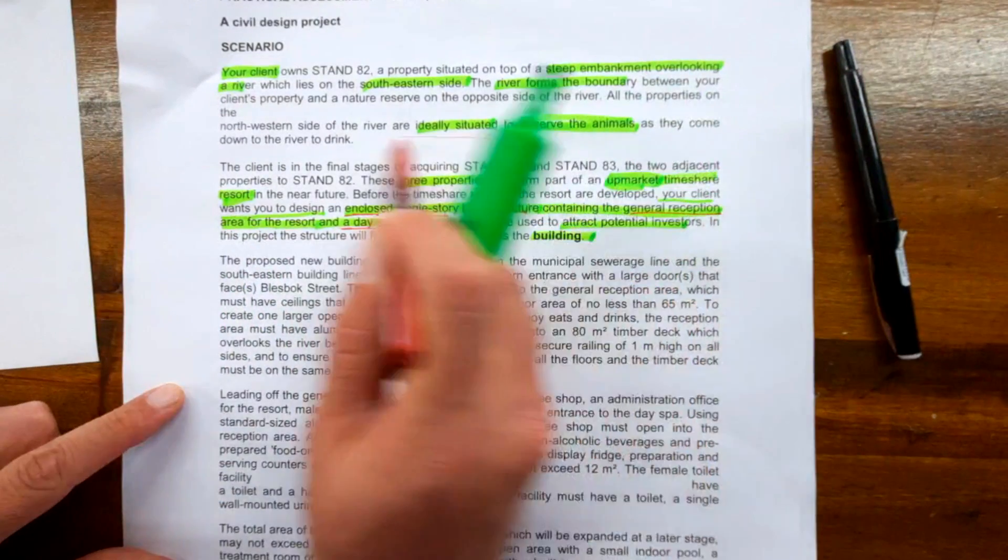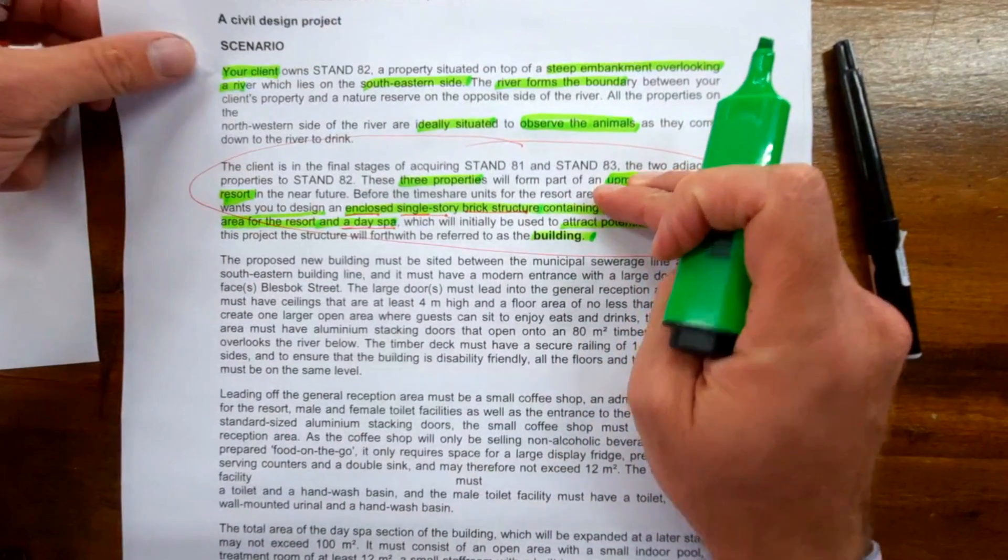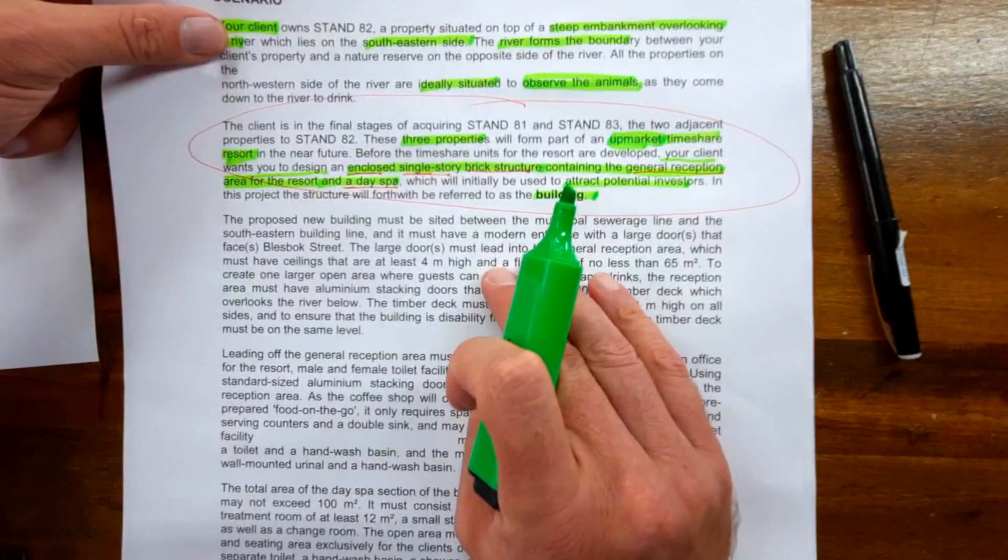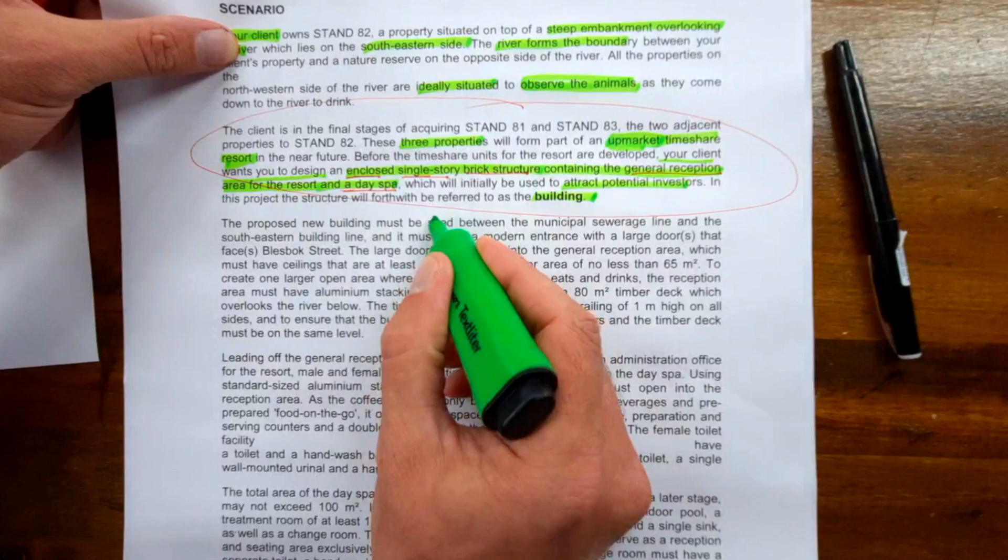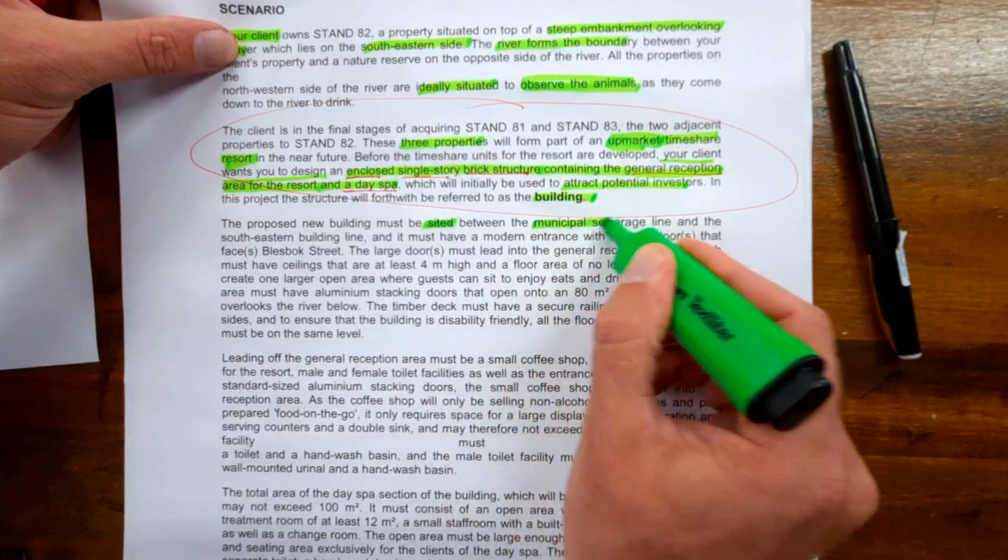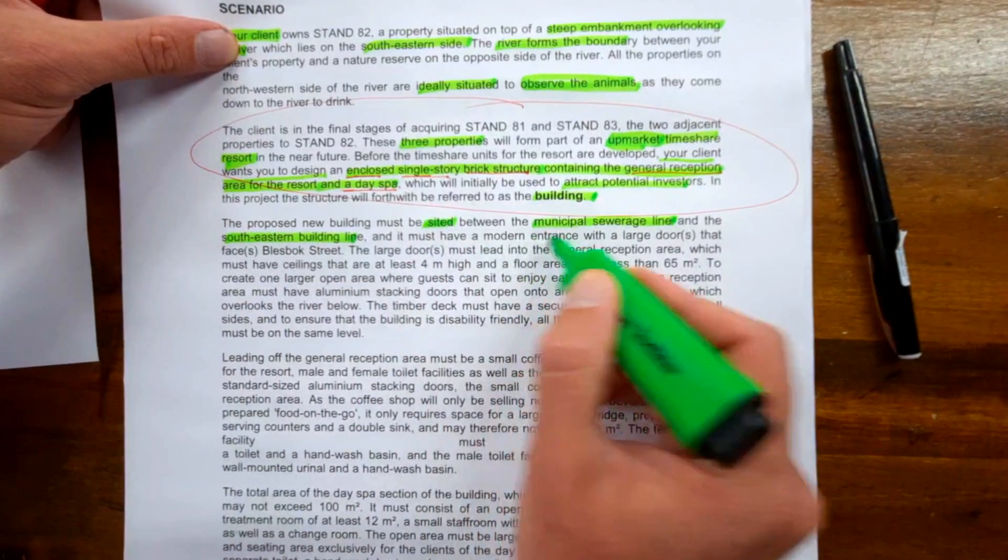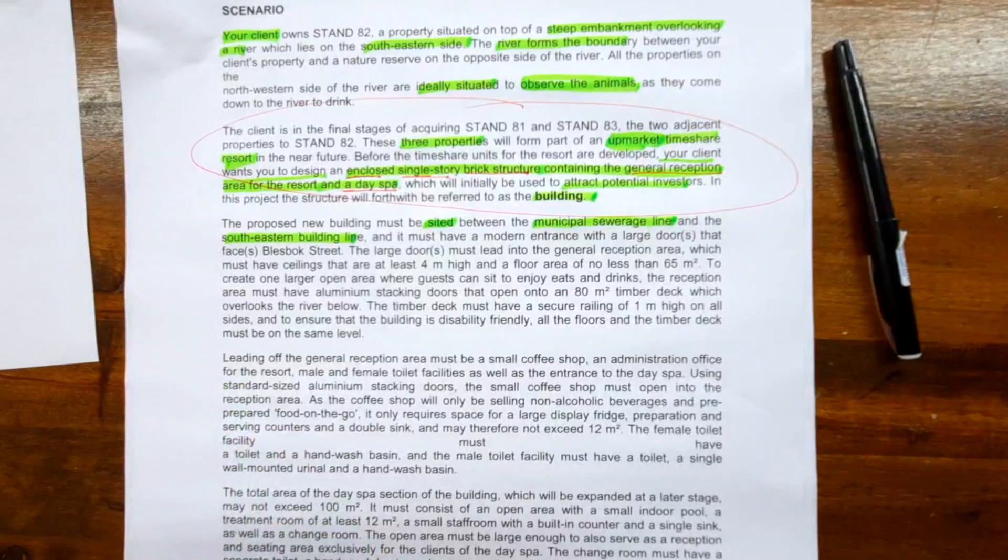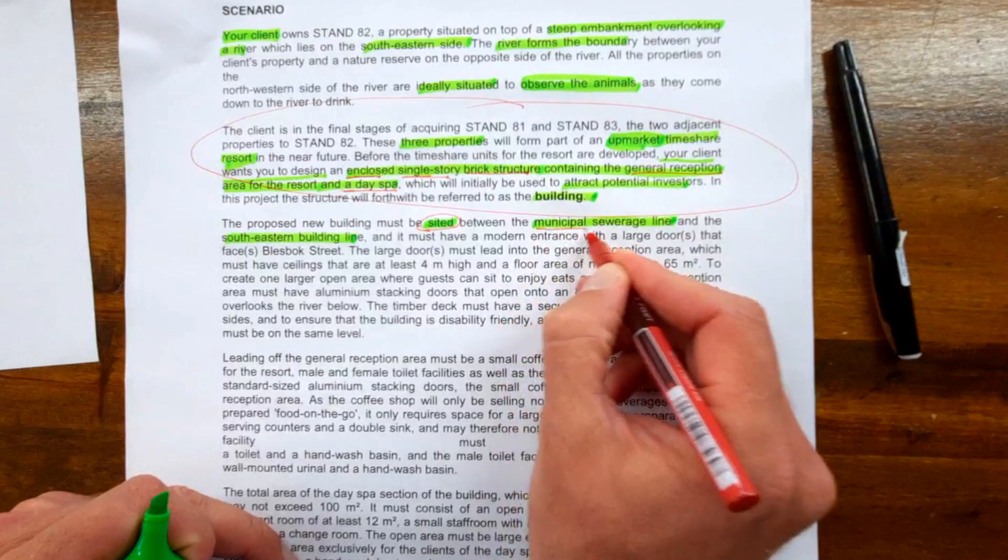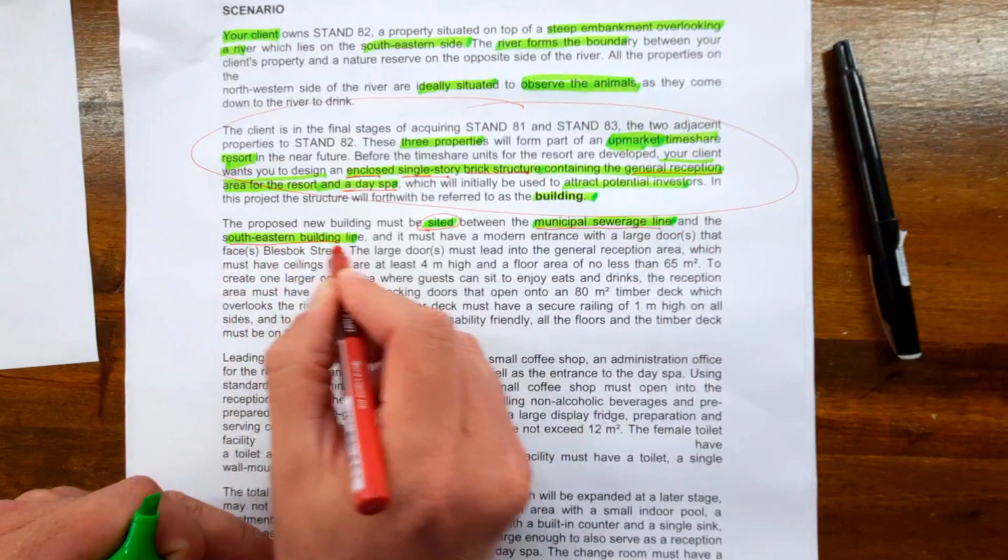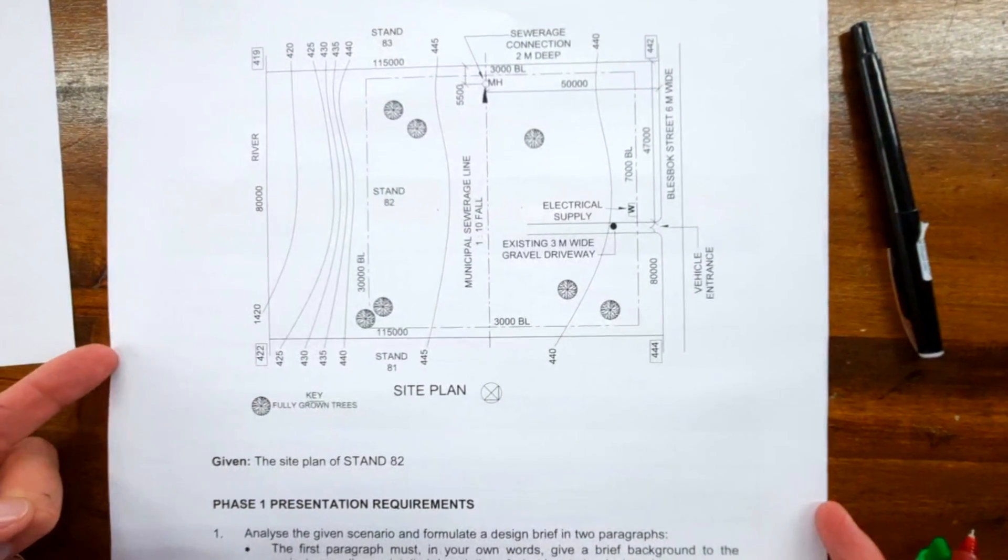The proposed new building must be sited, or positioned, between the municipal sewer line and the southeastern building line, and it must have a modern entrance. Let's look at the site plan now. This you also have received as part of the document.